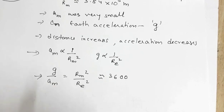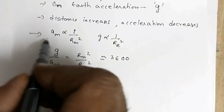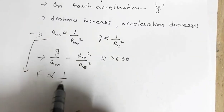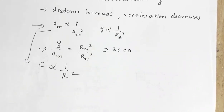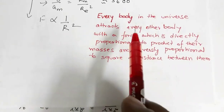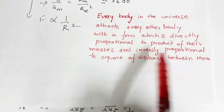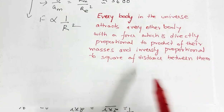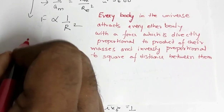Since acceleration is inversely proportional to the square of the distance, and acceleration is produced by force, force is also inversely proportional to the square of the distance. From this observation Newton gave the famous universal law of gravitation, which states: every body in the universe attracts every other body with a force which is directly proportional to the product of their masses and inversely proportional to the square of the distance between them.